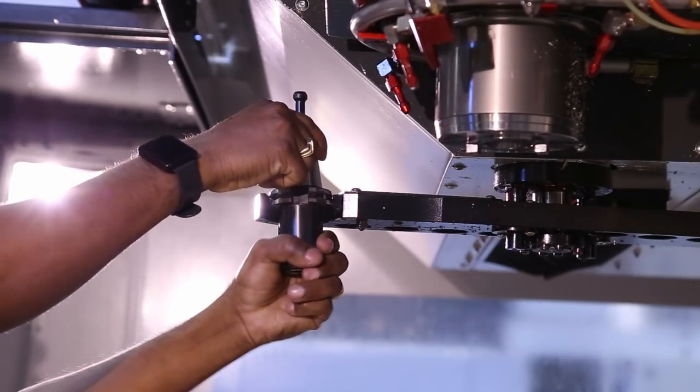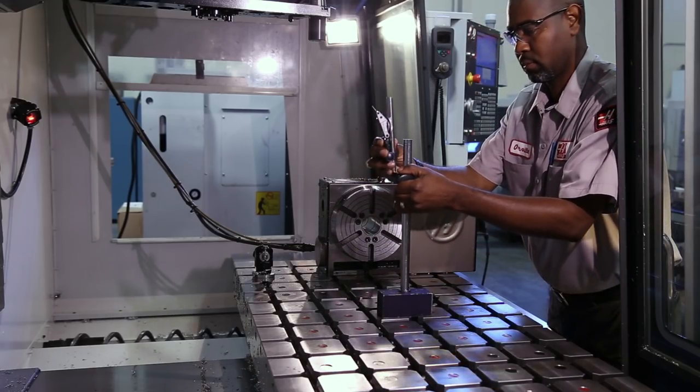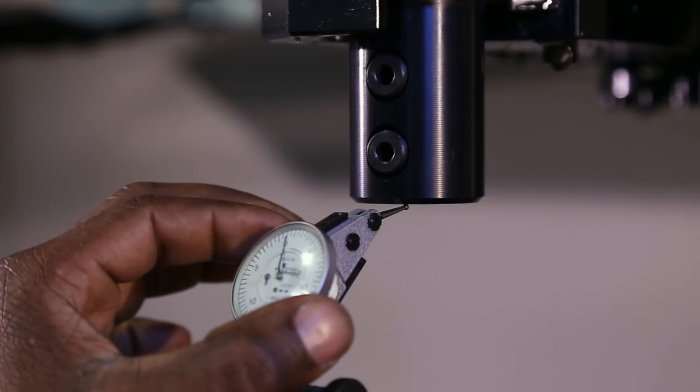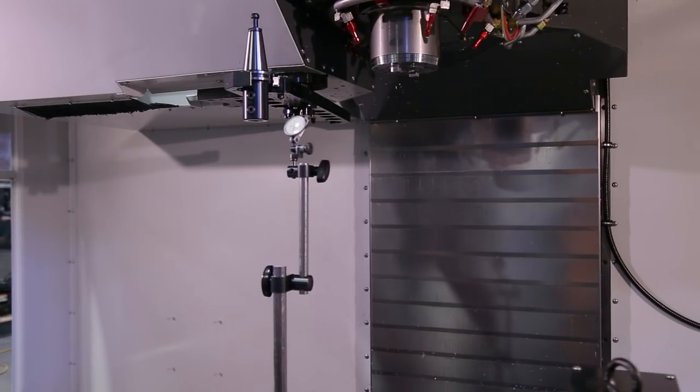Put a blank tool holder in the double arm, set up a 5 tenths indicator and mag base on the table with the tip of the indicator touching the bottom of the tool holder, and set the dial to zero. Jog the X axis away from the double arm towards the spindle without moving the indicator.